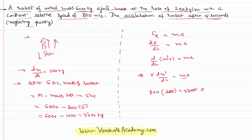Canceling the three zeros, acceleration equals 80 times 2 divided by 5, which equals 32 meters per second squared. Thus, the rocket at that instant will be moving upward with an acceleration of 32 meters per second squared.